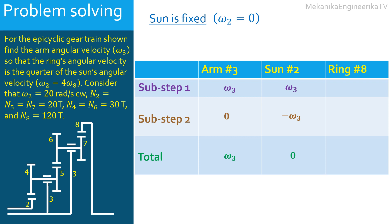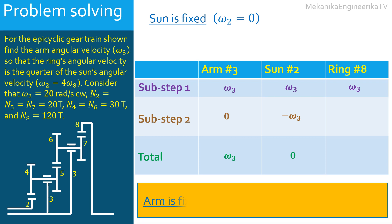For the first sub-step, the arm and the sun have the same angular velocity. In this case, the whole gear train will behave as one rigid body, and all gears will have the same angular velocity as the arm and the sun. Hence, the angular velocity of the ring is equal to the angular velocity of the arm. For the second sub-step, the arm is fixed. Thus, it is possible to take advantage of the result established previously when the arm was supposed static: if the arm is fixed, the angular velocity of the ring ω₈ is equal to ω₂ times the ratio (N₂·N₅·N₇)/(N₄·N₆·N₈).